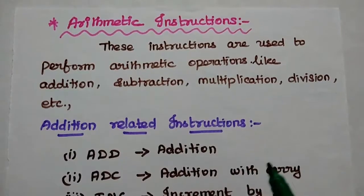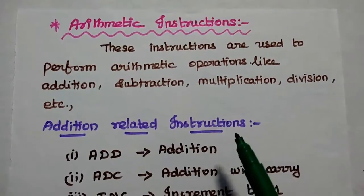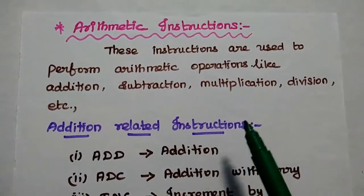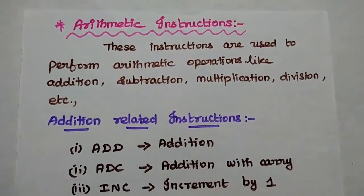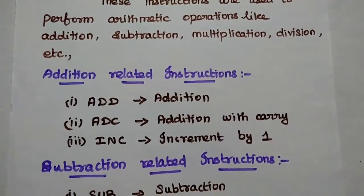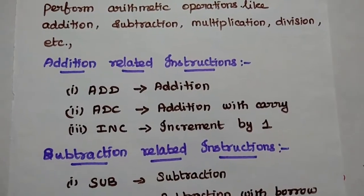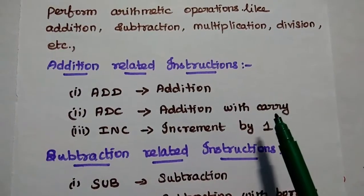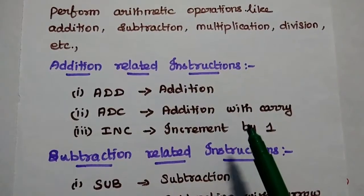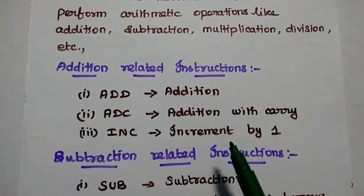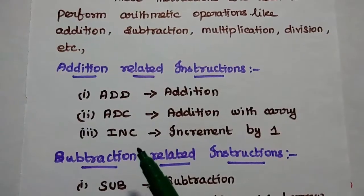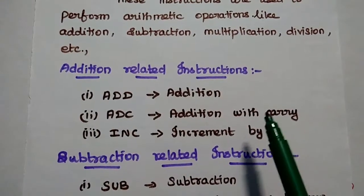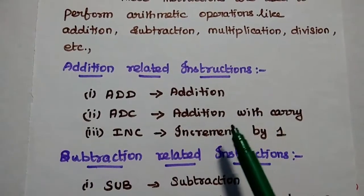Next are Arithmetic Instructions. These instructions are used to perform arithmetic operations like Addition, Subtraction, Multiplication, Division, etc. Addition-related instructions: ADD represents the addition of given data with the accumulator value and stores the result in the accumulator (A-Register). ADC is Addition with Carry — here we include the carry in the addition. INC represents Increment, that means add 1 to the given data.